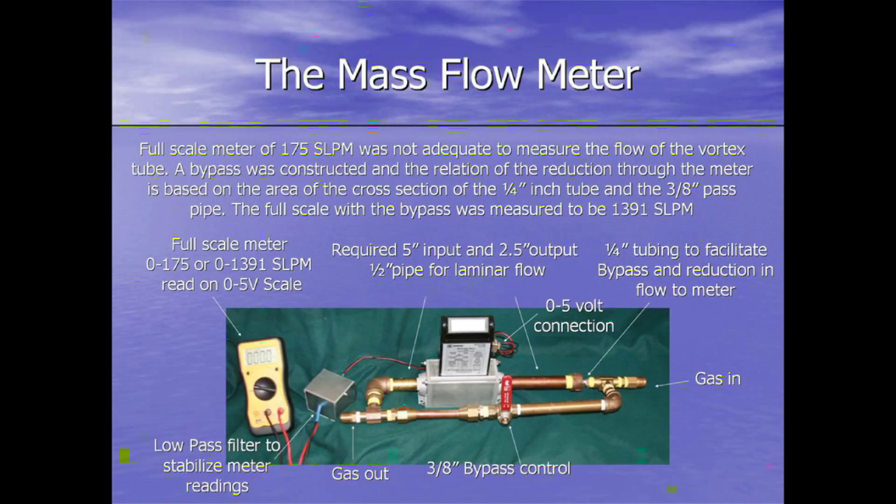I created the meter, as you see in the picture, with a bypass on it with a bypass control, which is simply just a valve, which allows me a change by a ratio of 7.947 to 1. So that the full scale meter reading on the voltmeter, instead of being 0 to 175, is 0 to 1391 standard liters per minute.